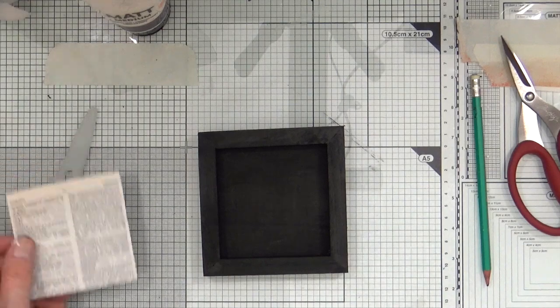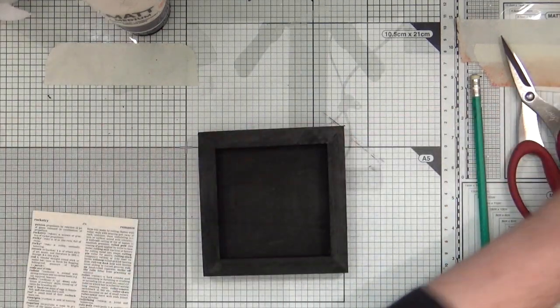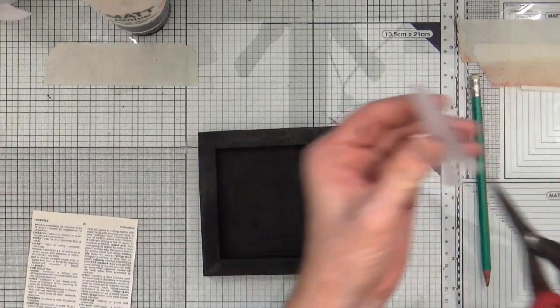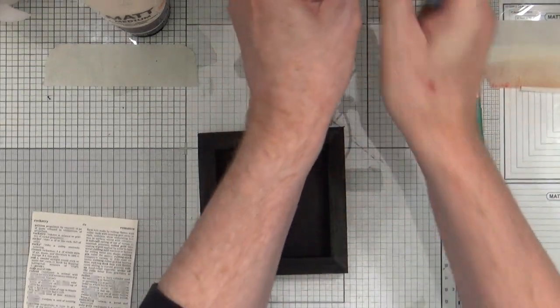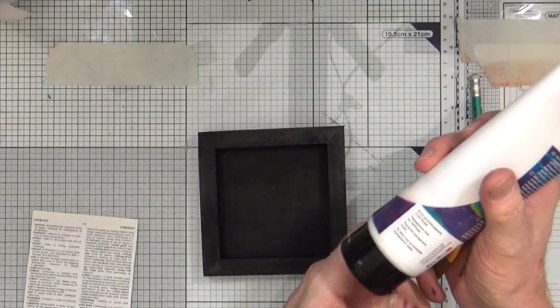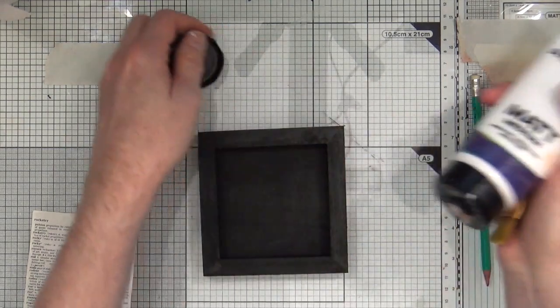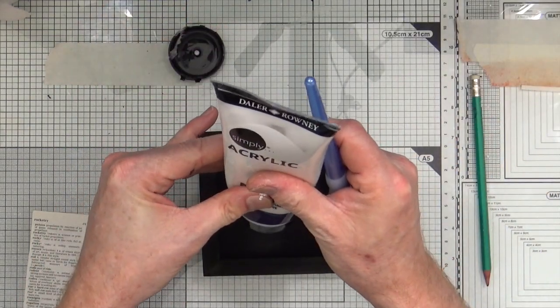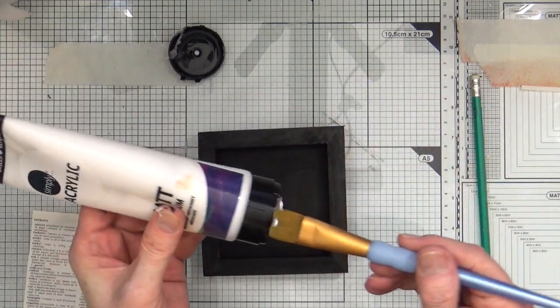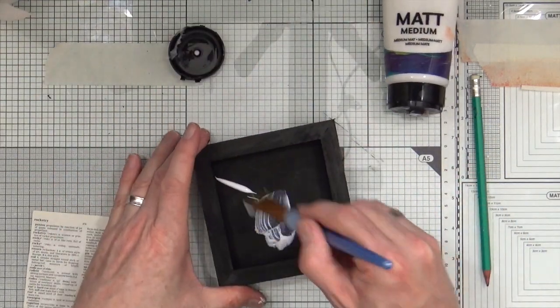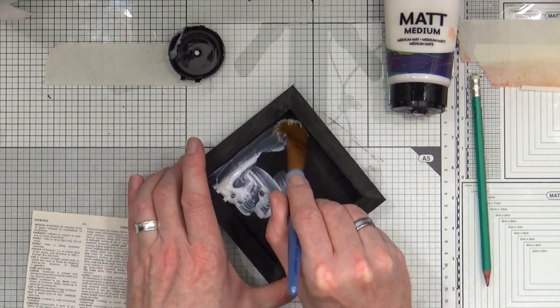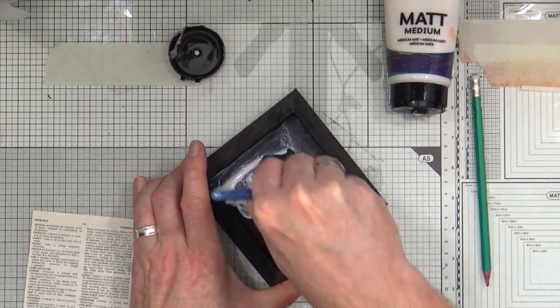So all I'm going to do is just take a small piece of—those scissors out of the way, I keep stabbing myself with them because they're very sharp. I'm just going to take some matte medium and I'm going to go around the inside of the box. Paint the inside and then I'll paint the underside of the paper.